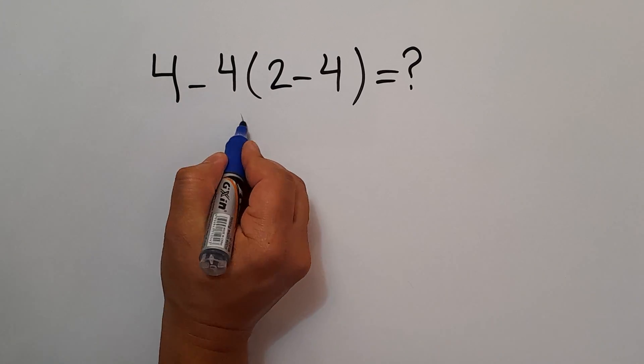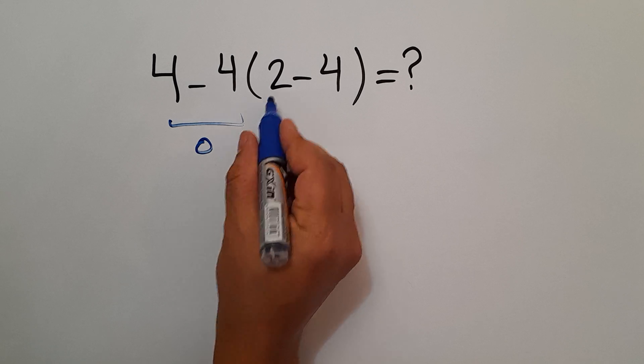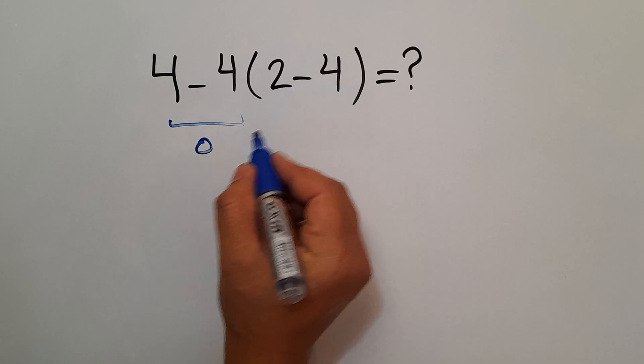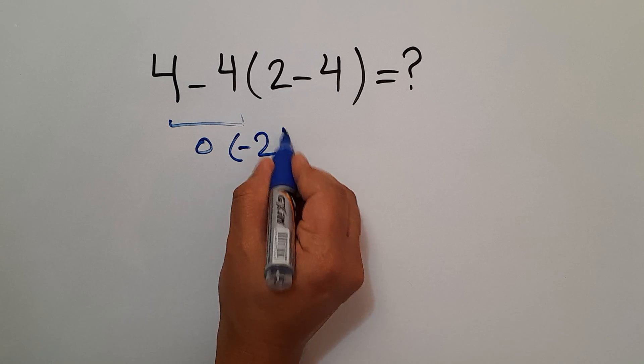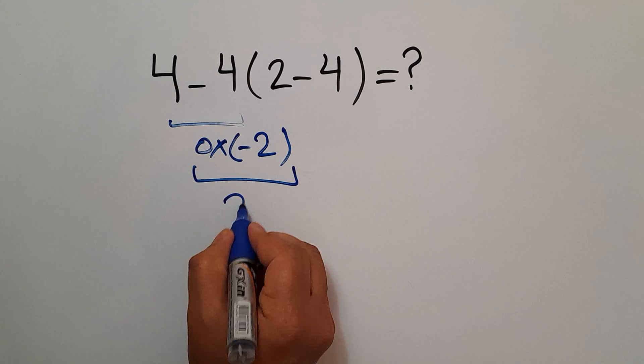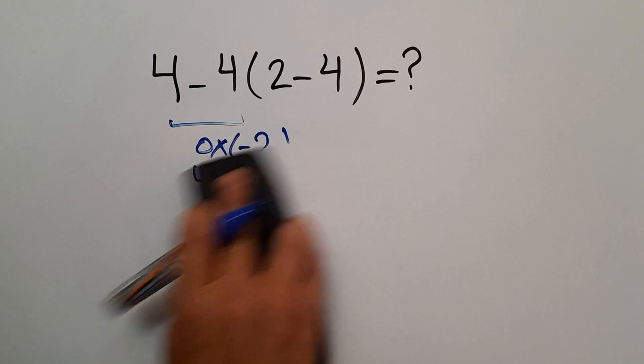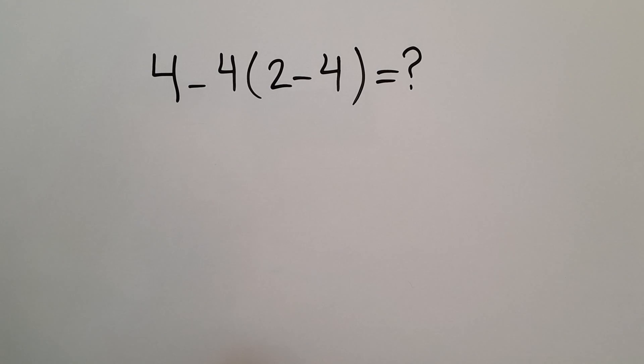4 minus 4 equals 0, and 0 times 2 minus 4 gives us negative 2, so 0 times negative 2 equals 0. But this answer is not correct because according to the order of operations, which is PEMDAS...